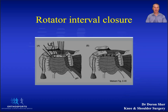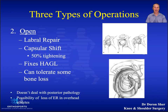Another adjunct to Bankart repair is a rotator interval closure. By stitching the subscapularis to the supraspinatus you reduce anterior translation in abduction and external rotation. This can cause reduced motion in that direction, which is why it's often avoided, but it is very useful in patients who are ligamentously lax.